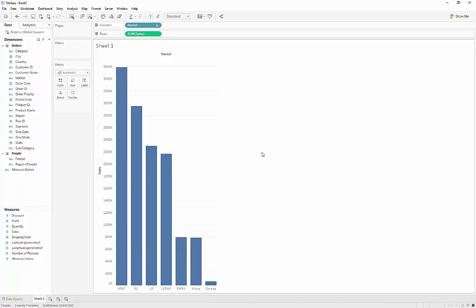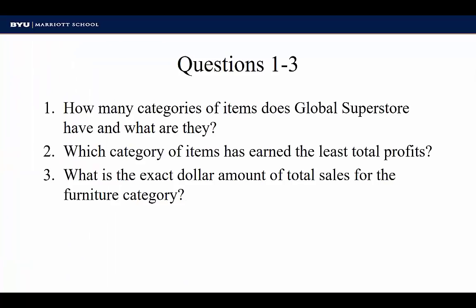With this basic introduction to Tableau, we're going to answer three questions. First, how many categories of items does Global Superstore have and what are they? Second, which category of items has earned the least total profits? Third, what is the exact dollar amount of total sales for the furniture category? I recommend pausing the video, trying to answer these three questions, and then we'll come back and answer them together.